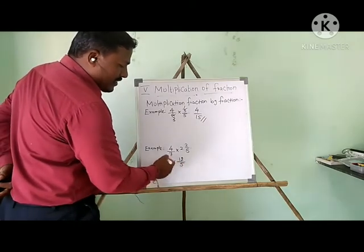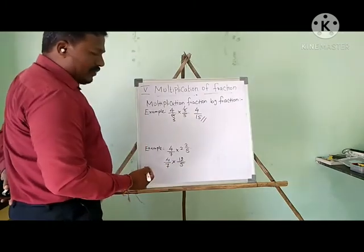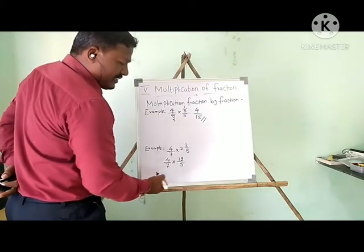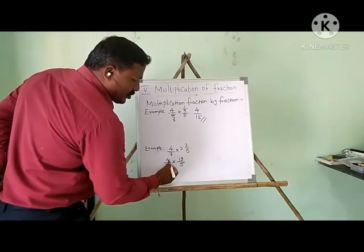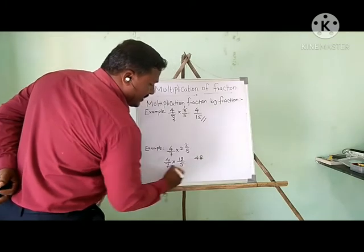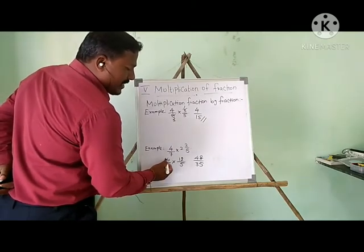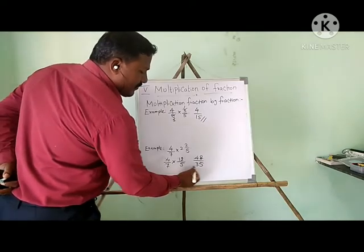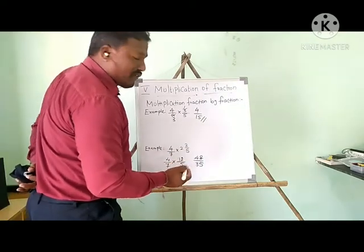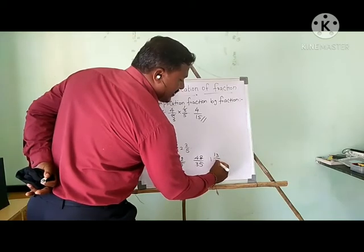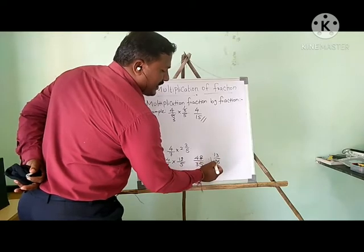We cannot simplify 7 and 4. But we can simplify other terms. Now I take the LCM: 7 × 5 = 35. I multiply both denominator and numerator: 4 × 12 = 48, and 7 × 5 = 35. So the result is 48/35. Since it is an improper fraction, if you convert to a mixed fraction: 1 and 13/35, because 35 + 13 = 48. So 48/35 is the answer.